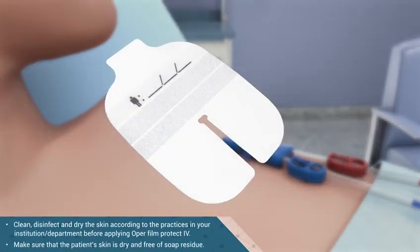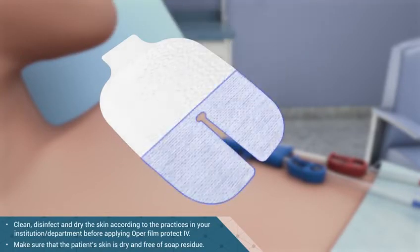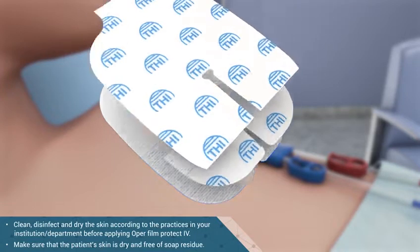OppaFilm Protect IV is a transparent polyurethane film dressing with an application frame. The notched area is reinforced with non-woven fabric.